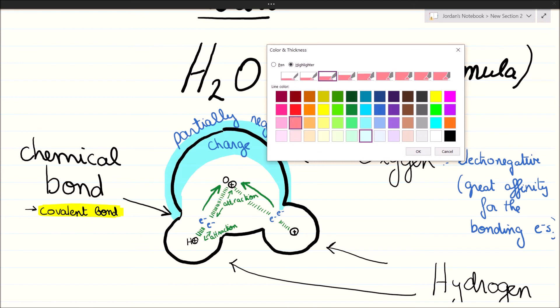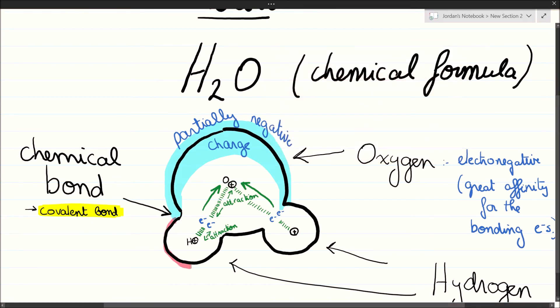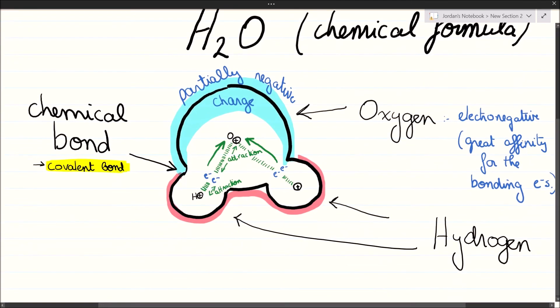So you can imagine there's a denser cloud of negative charge surrounding the oxygen atom due to its electronegativity. It's not a full negative charge—oxygen in water is not O minus—but it is a partially negatively charged atom. Oxygen within water is a partially negatively charged atom.